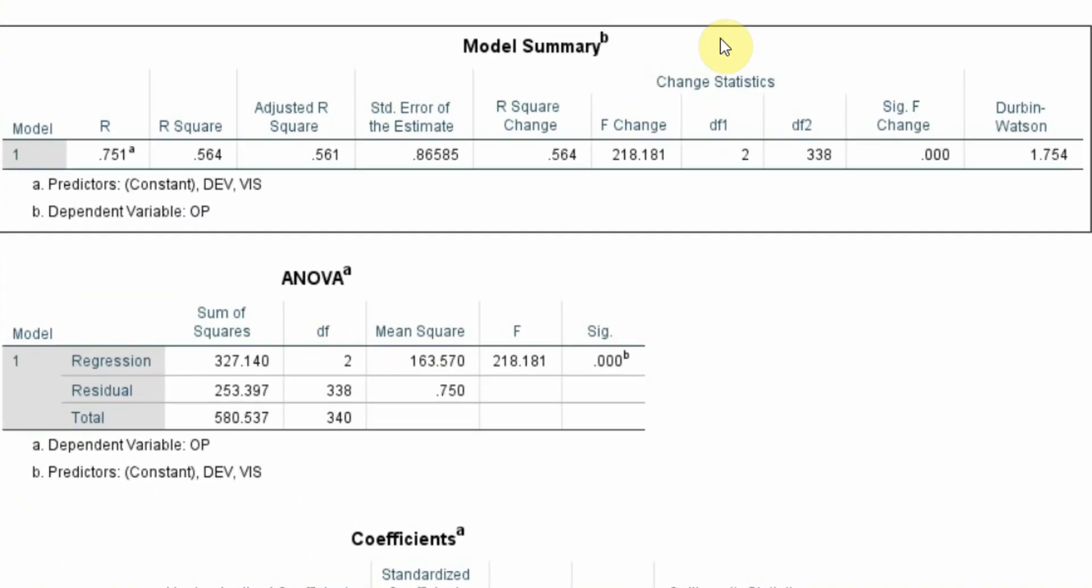This is the model summary. Overall we can see there is a significant impact of the predictors on the outcomes. This is the correlation value and I am interested in this one, R-square 0.564.